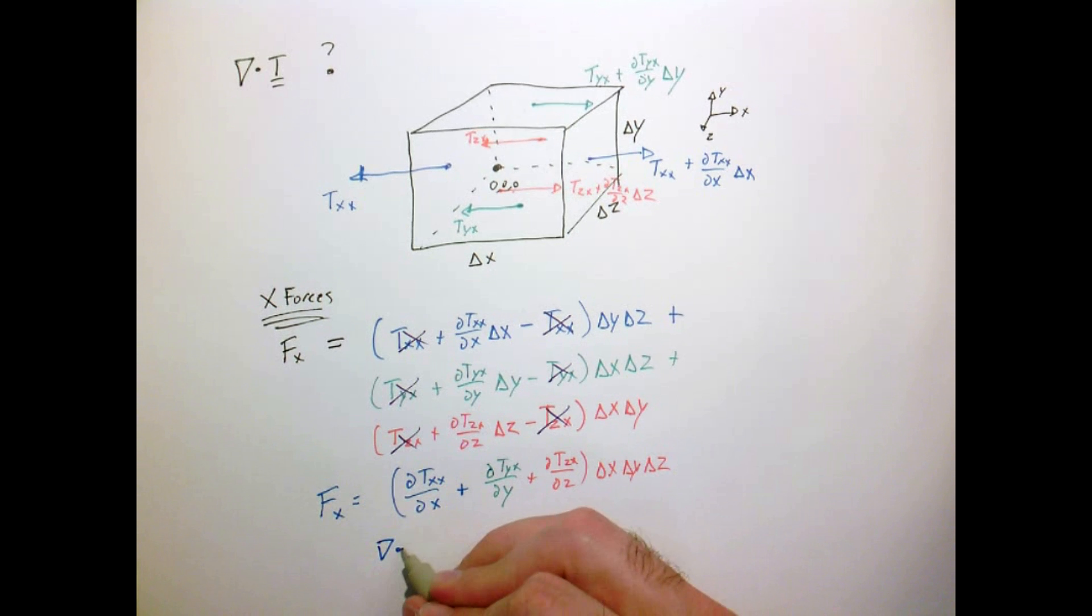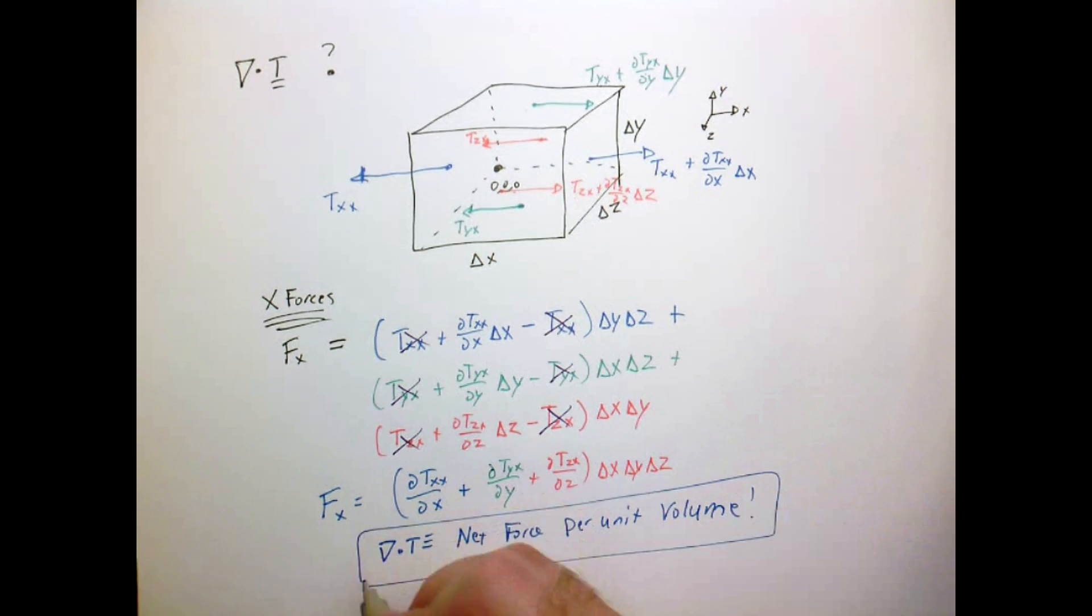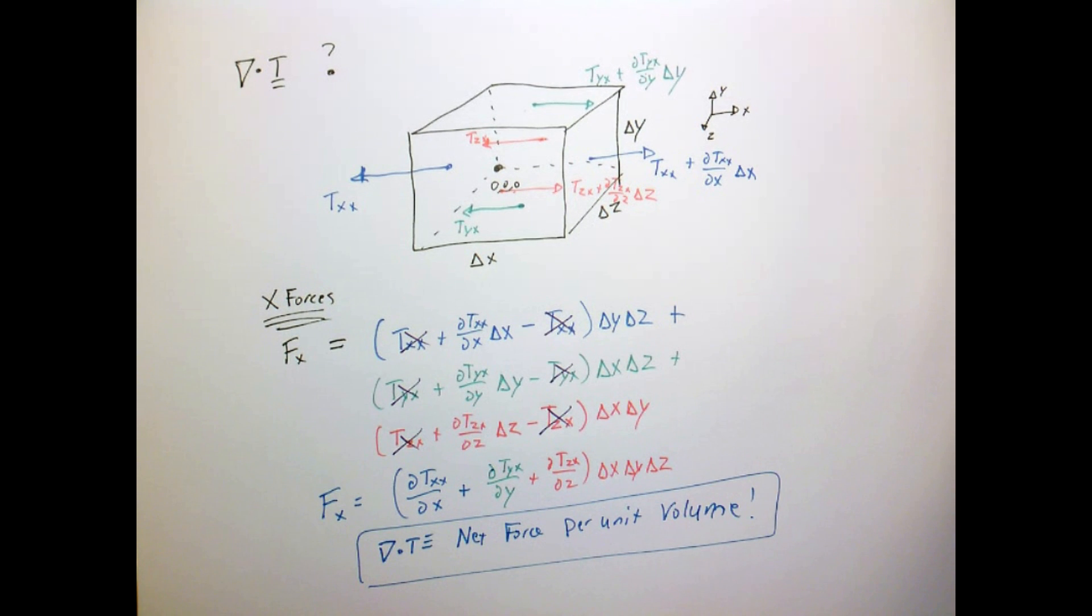So that first component is the net force in the x-direction times the volume. So we can think of the divergence of the stress tensor as the net force per unit volume.